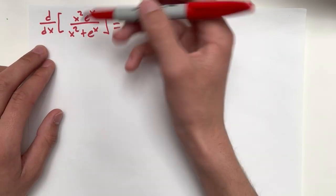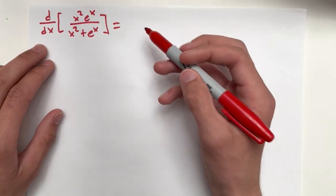This is going to be a quotient rule combined with the product rule. So that's going to be thrilling.